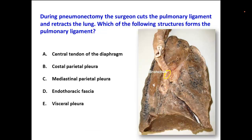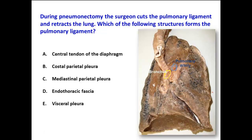At the root of the lung, we can see here: this is the pulmonary artery — the artery above — then the bronchus behind it, and then the pulmonary veins, which carry the oxygenated blood. There are two pulmonary veins located close to the inferior aspect of the hilum of the lung.